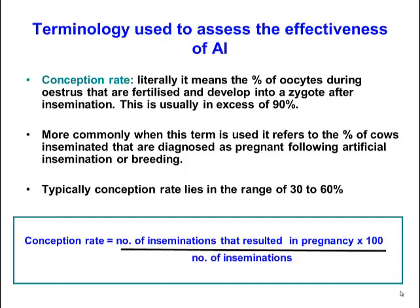The problem is we don't really know how many eggs are actually fertilized — we can't see it or measure it with conventional techniques. So usually when we're pregnancy testing 6, 8, or 10 weeks after insemination and we say the conception rate was 50% or 40%, we're not saying that 40% of eggs were fertilized. What we're saying is that of those cows that were inseminated, 40% are diagnosed as pregnant. That is the more commonly used meaning of the term.